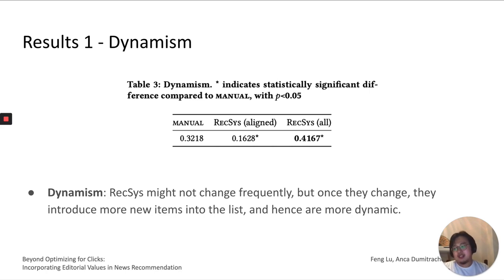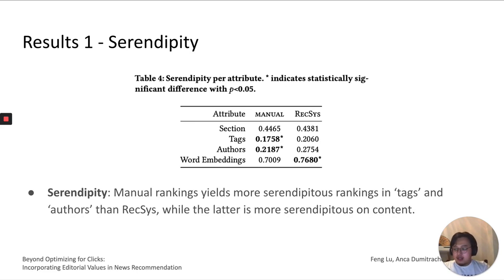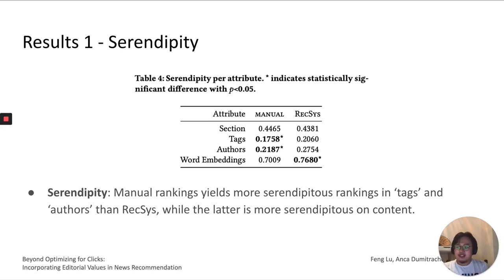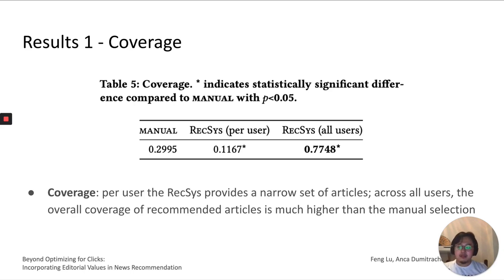For dynamism, we found that our recommendations may not change frequently, but once they change they introduce more new items into the list. For serendipity, manually selected lists are actually more serendipitous than our recommendations in terms of tags and authors, while our recommendations are slightly more serendipitous on content — again because the model is more personalized on authors and tags. For coverage, our recommendations provide a narrow set of articles per user, which makes sense for personalization. However, considering recommendations across all users, the overall coverage of recommended articles is much higher than the manual selection, which is exactly what we expect.